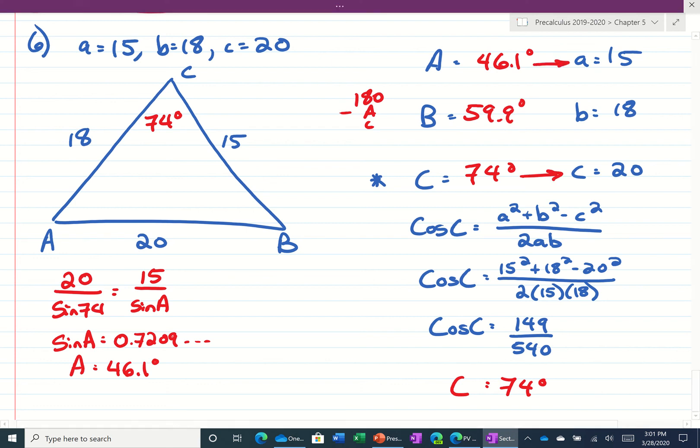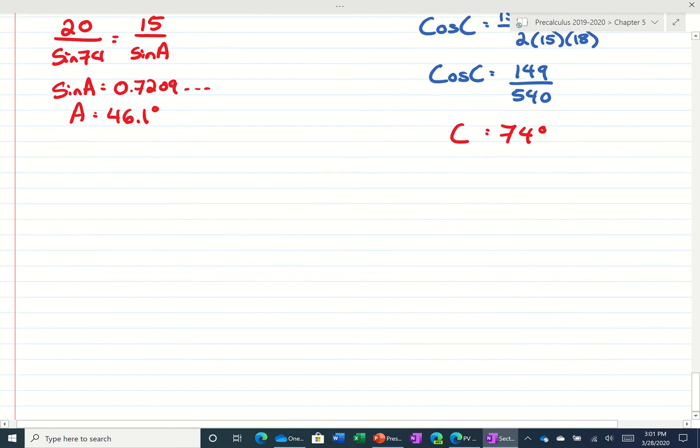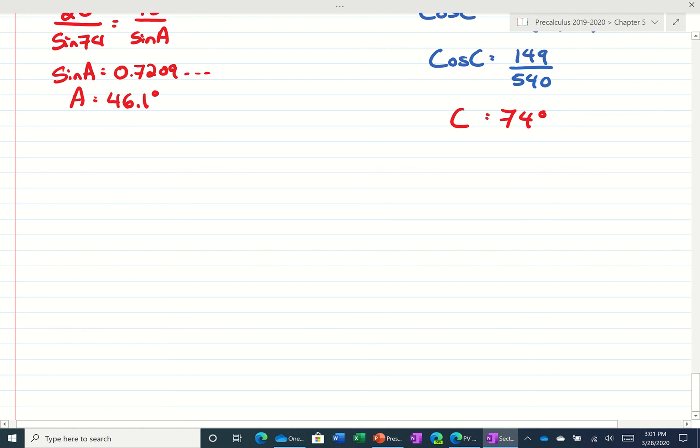Alright, we'll do one more. Take a look at number, let's see, 6. Maybe we'll do number 10. The number 10, it says A is 10, C is 8, and B is 100 degrees.